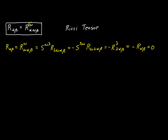What happens if we form the contraction between the upper index and the third one on the bottom? The Riemann tensor is antisymmetric with respect to its last two indexes, so flipping those two inserts a negative sign, and what we get is the same definition we started with except all components are negative. That doesn't give us any new information. So forming the contraction between the upper index and the middle index is really the only meaningful way to form a new tensor from the Riemann tensor — any other result is either zero or redundant.